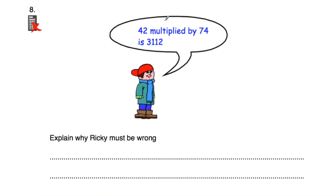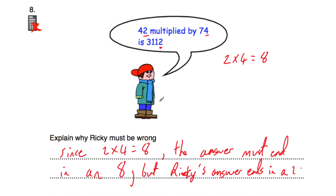Question number eight: Ricky says 42 multiplied by 74 is 3,112. We need to explain why Ricky must be wrong. Consider the end digits: 2 times 4 is equal to 8, so the answer must end in an 8. But Ricky's answer ends in a 2, so Ricky is wrong.